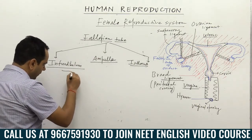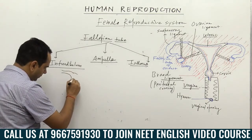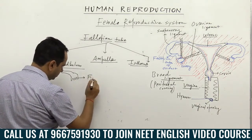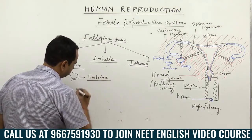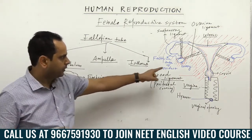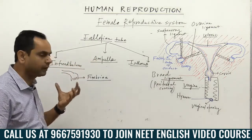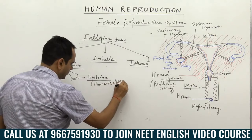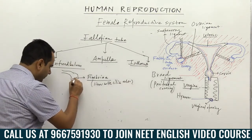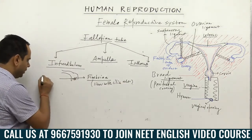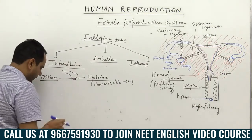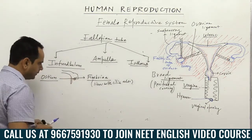The infundibulum starts with finger-like projections called fimbriae at their margin. The fimbriae are also ciliated structures, and there is a central opening between the fimbriae called the ostium.